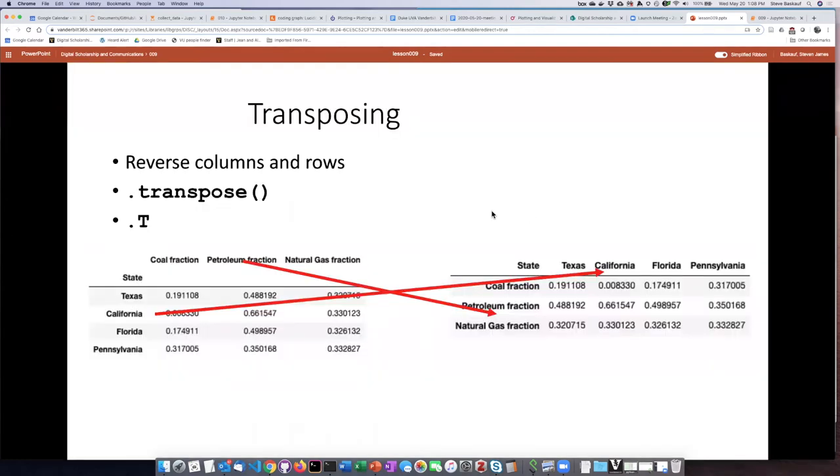The first kind of rearrangement that we're going to talk about is transposing. When you transpose a table, you're basically reversing the rows and the columns.